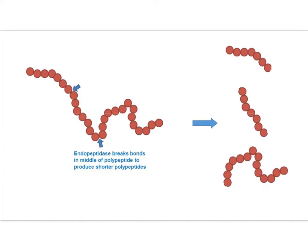The first type of enzyme is endopeptidase. These hydrolyse peptide bonds towards the middle of the polypeptide chain. So we've got one large polypeptide here; endopeptidase has acted, broken peptide bonds, and we've got three smaller polypeptides here.